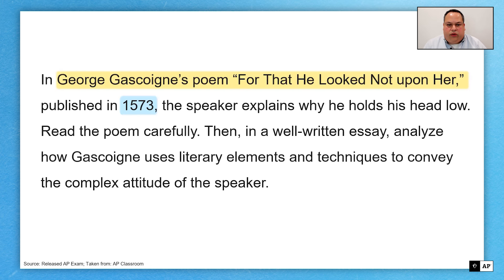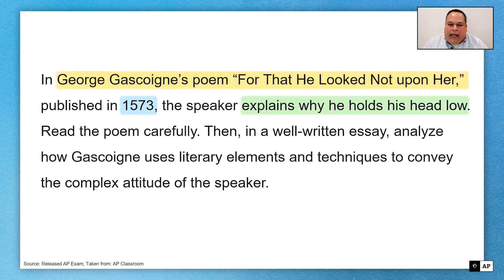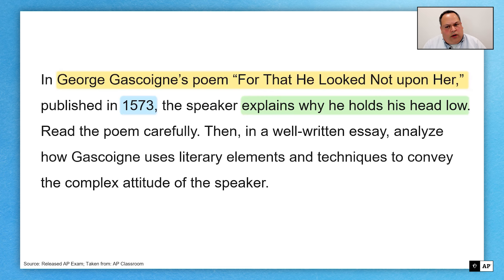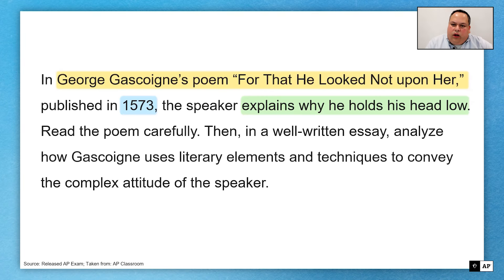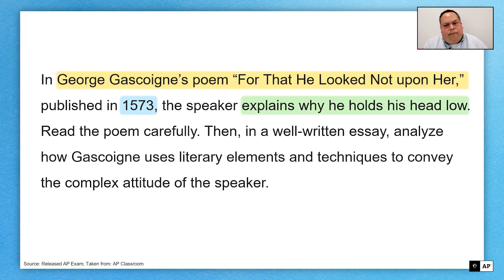Then we have two very important sections to this prompt. We have the context — this is your best friend. We don't want to enter a reading cold without knowing what to expect. Even though the title gives us some guidance, the context will give us the precise, exact context for the poem. The speaker will explain why he holds his head low. As soon as we are introduced to a speaker, I want you to start thinking about the emotional, physical, and psychological nature of this speaker — connecting this to the title. The speaker is avoiding a stare, avoiding an interaction with this woman.